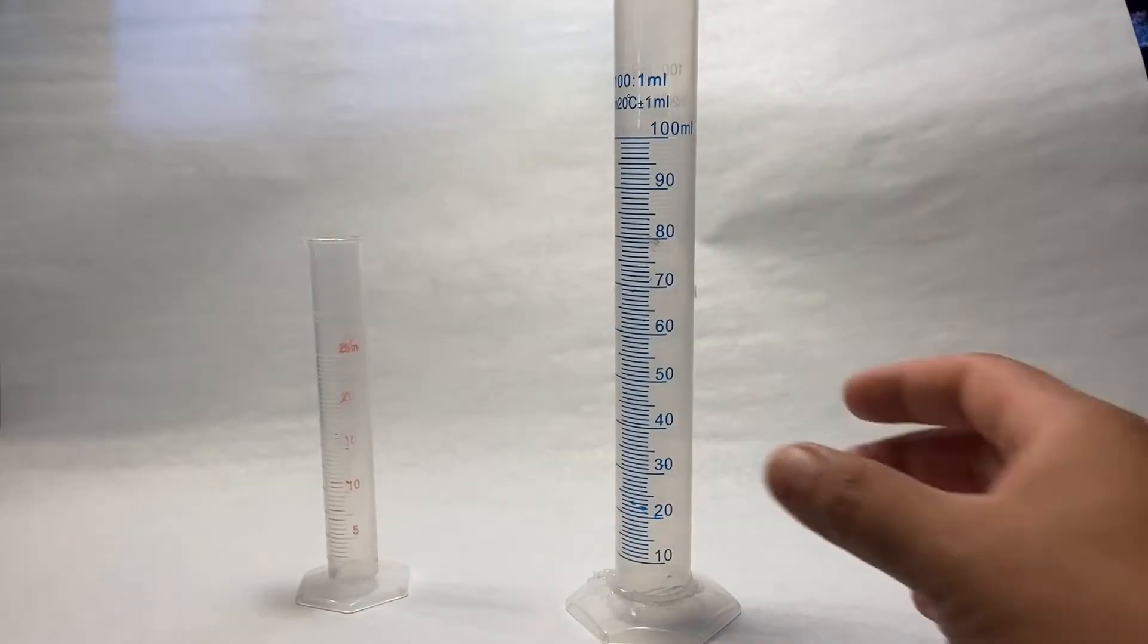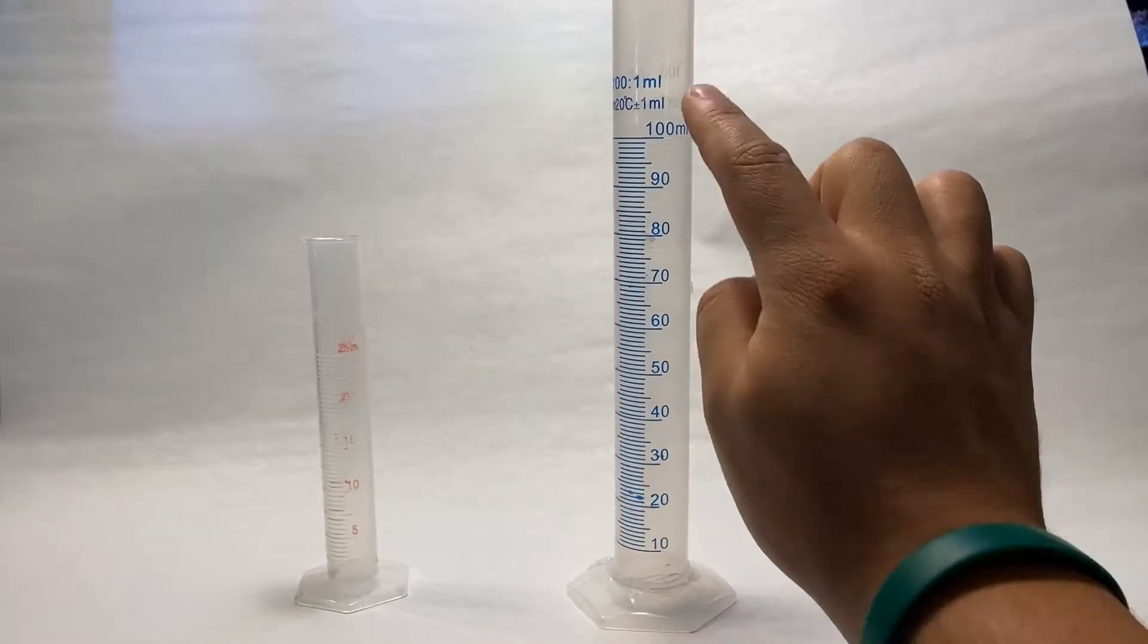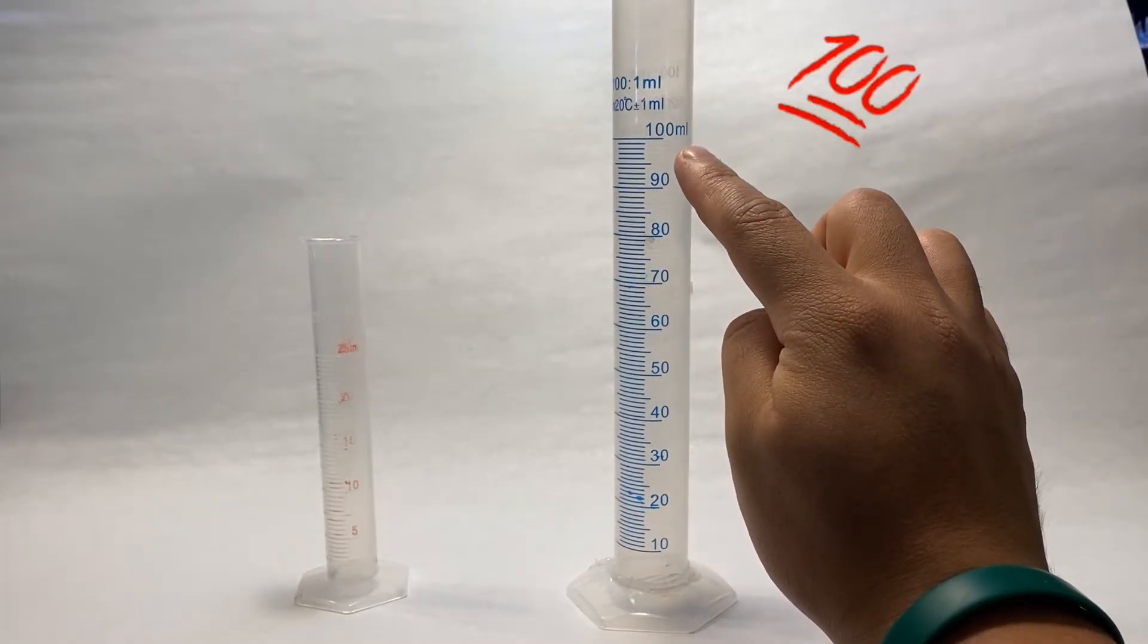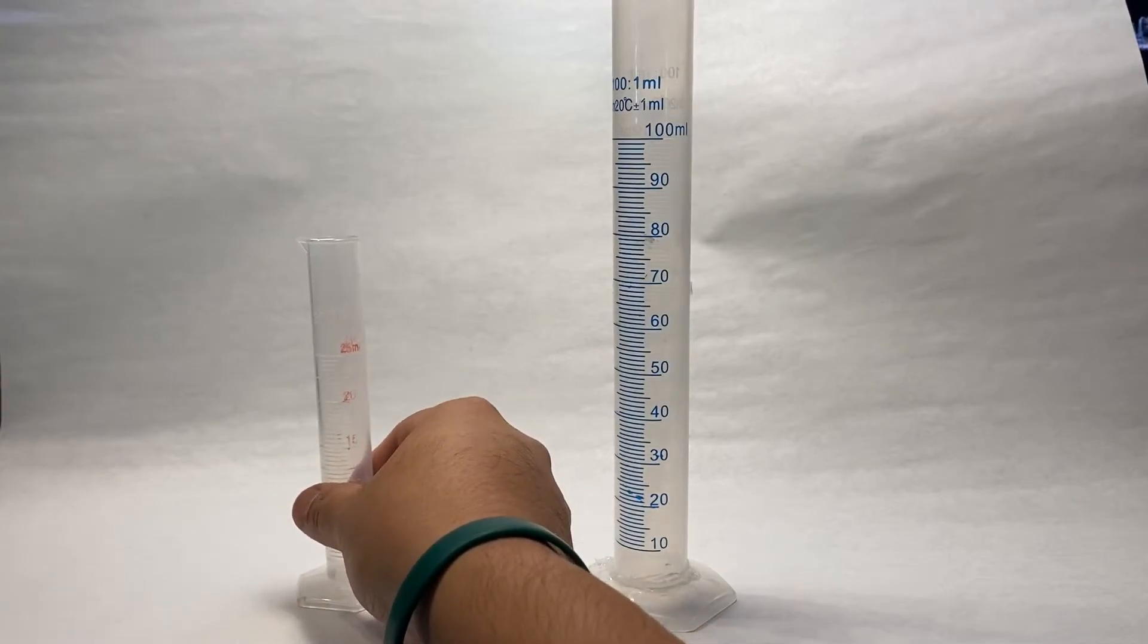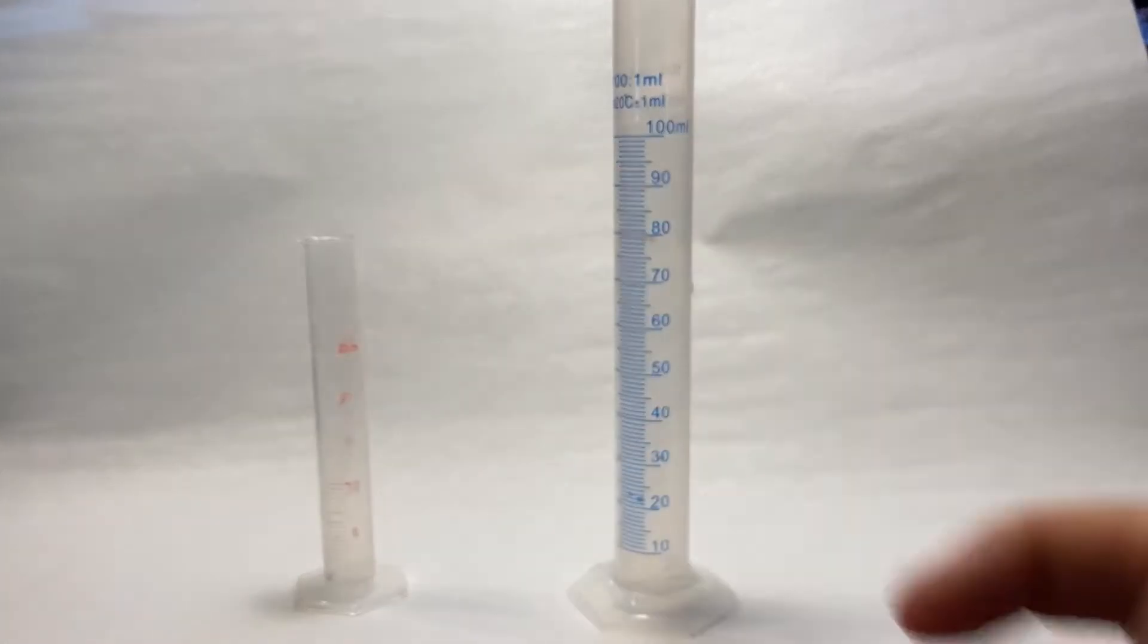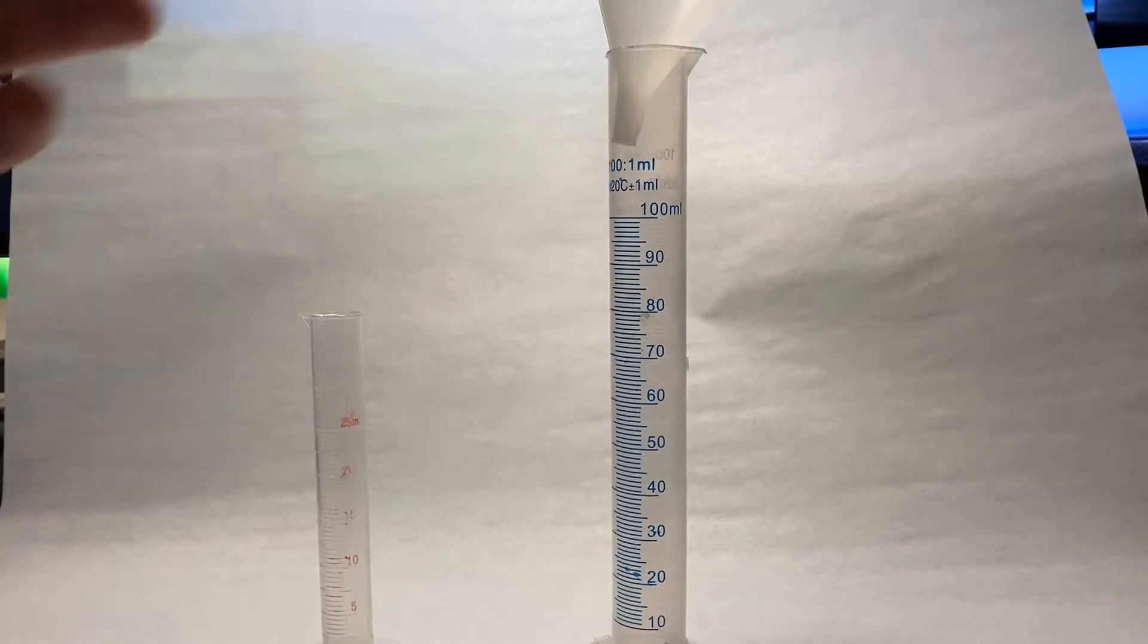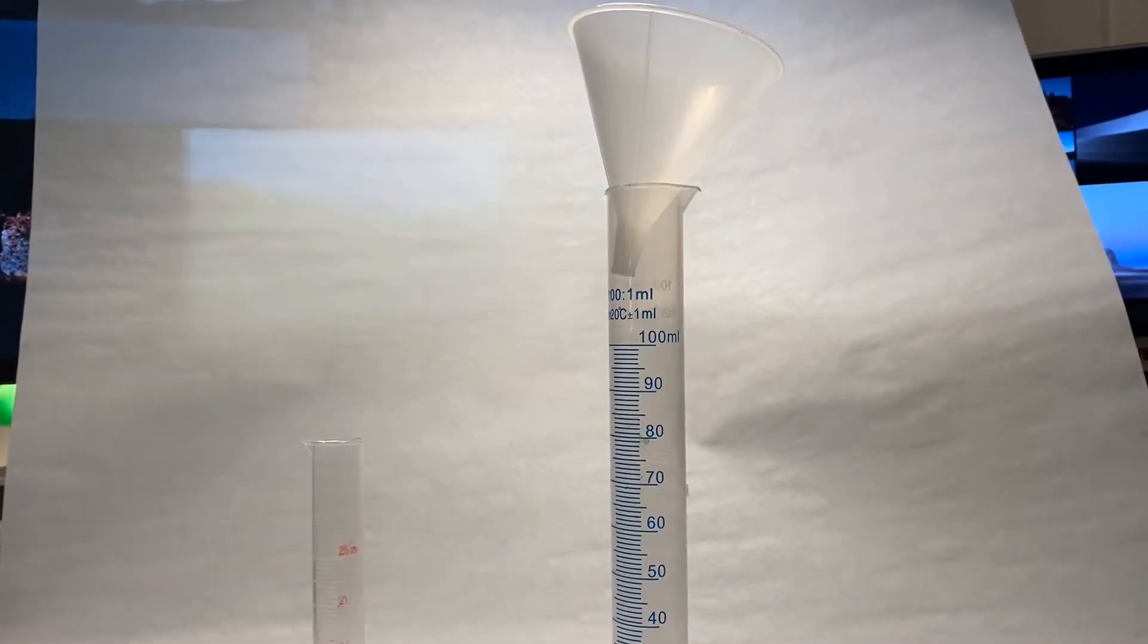All right, so stay tuned, hopefully you guys enjoy and let's roll it. Here we have a graduated cylinder. This one goes up to 100 milliliters, this one is going to be kind of hard to see, only goes up to 25 milliliters. Now what I'm going to do, I'm going to take my funnel, put my funnel up there and I'm going to add some water.